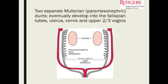For the fallopian tube, uterus, cervix, and upper two-thirds of the vagina to develop, the Müllerian ducts — paramesonephric ducts — first need to form, then fuse caudally to cranially, and then the septum in between needs to be resorbed caudally to cranially as well. A defect of formation, fusion, or resorption can lead to different types of Müllerian anomalies.